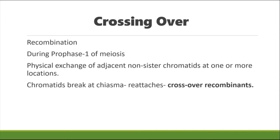Crossing over, also called recombination, occurs during prophase I of meiosis. Linked genes can be separated during this phase. When a physical exchange of equal pieces of adjacent non-sister chromatids happens, that process is called crossing over or recombination. During this process, one of the paired chromosome arms is exchanged physically at one or more locations, and the chromatids break at a chiasma and are reattached at a different homologous chromosome.